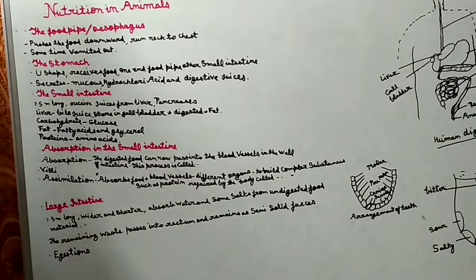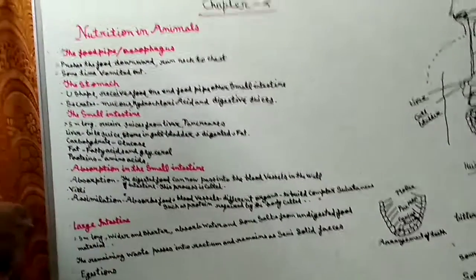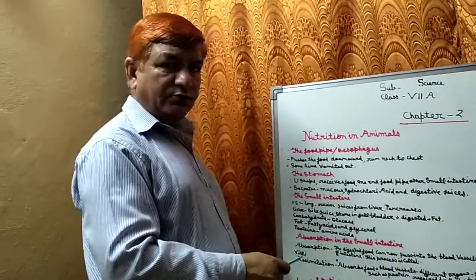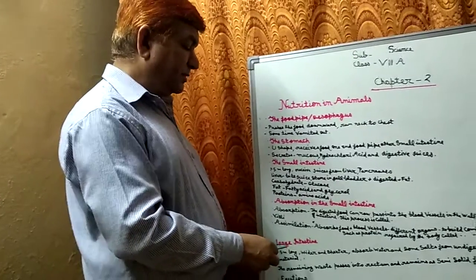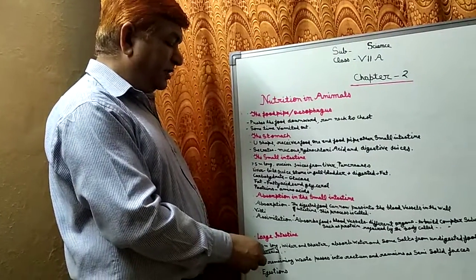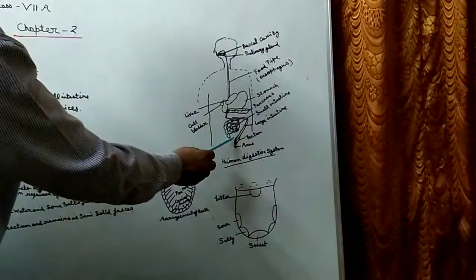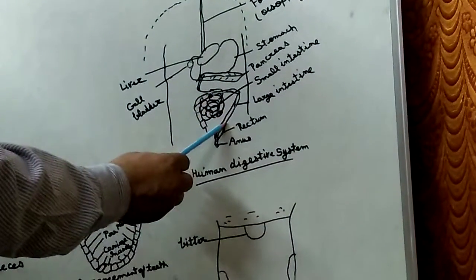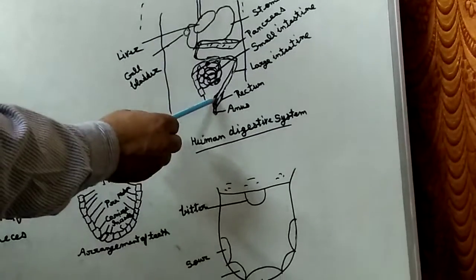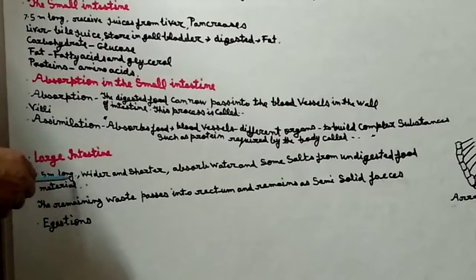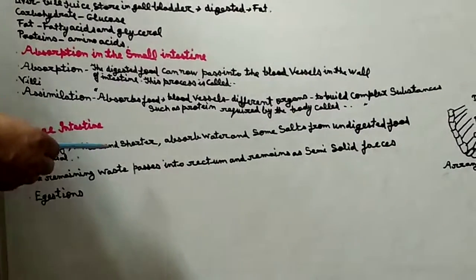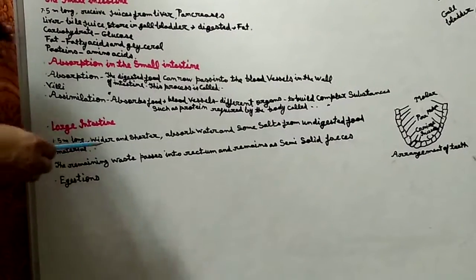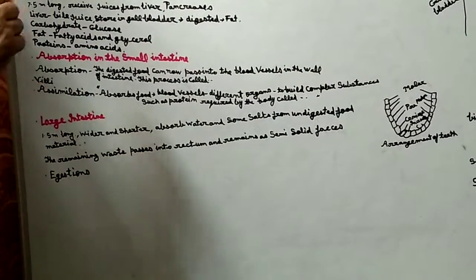Ab aate hain large intestine. Isme kuch khaas nahi hota. Yeh sabse chauda bhaag hota hai - 1.5 meter long hoti hai. Aap yahan dekhenge large intestine yeh wala bhaag hota hai. Iska jo end hai wo rectum kehlaata hai, aur anus kehlaata hai. Yeh wider part hota hai, shorter than the small intestine hota hai.